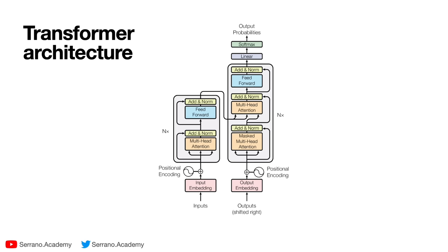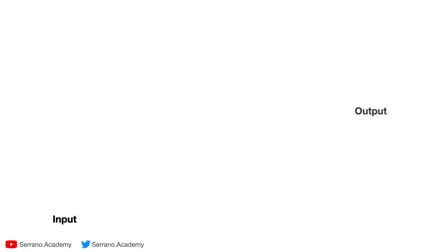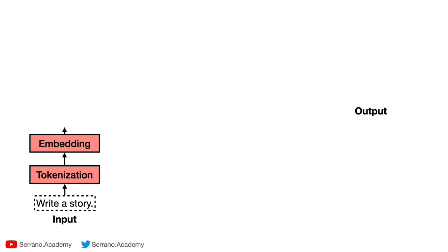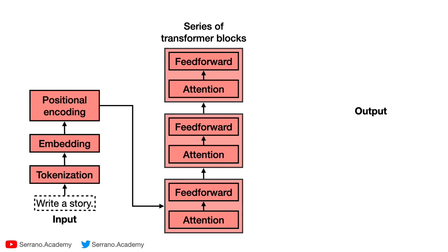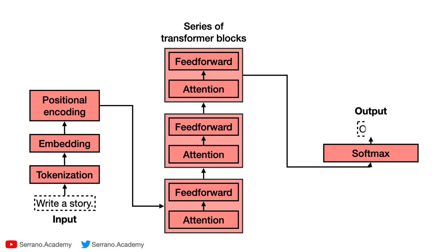In order to generate one word at a time and produce coherent language, a transformer needs a lot of parts. The architecture includes input embedding, multi-head attention, feed forward, etc. The way I like to see it: you have an input and an output. The input goes through tokenization, then embedding, then positional encoding as preprocessing. Then it goes through the main engine — a series of transformer blocks containing attention and feed forward layers. At the end is a softmax block, and out comes the answer — for example, the word 'once.'